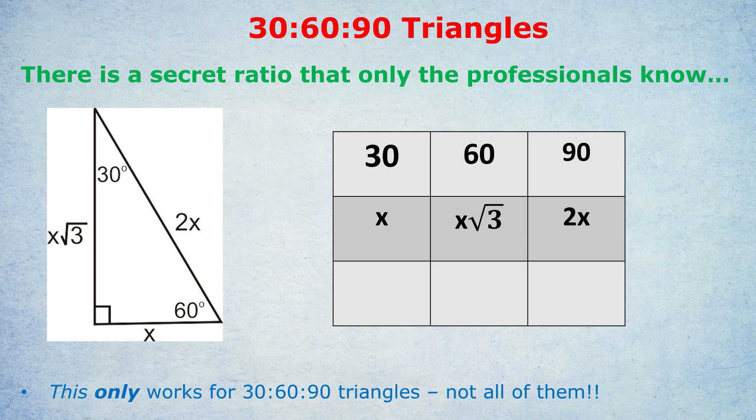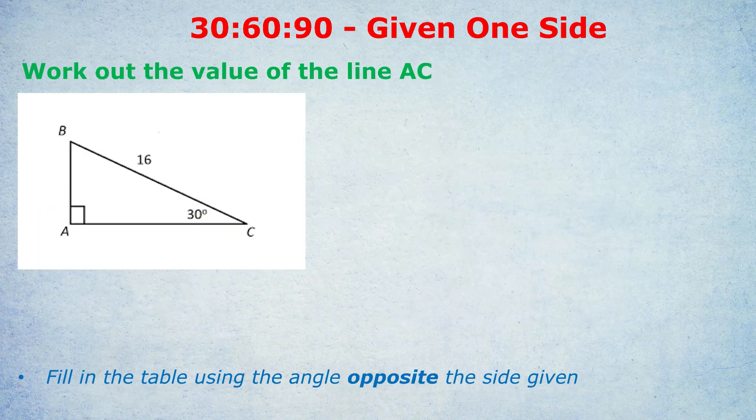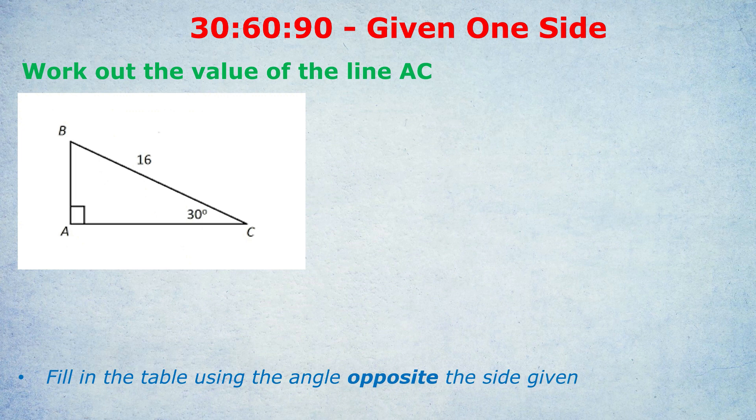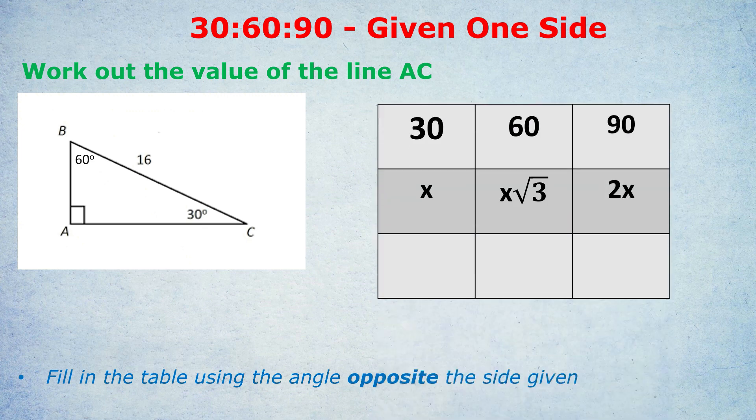Okay, so how can they test us? Here's a classic question. If they give us one of the sides of the triangle, the question would be: work out the value of the line AC. In the diagram you can see on the left, how do we react to that? First thing to notice is that we have a right angle - that's 90 degrees - and we have a 30 degree angle, which means the final angle at B must be 60 degrees. That's right, so we can fill in both the 60 degrees on the diagram and our grid that we have memorized.